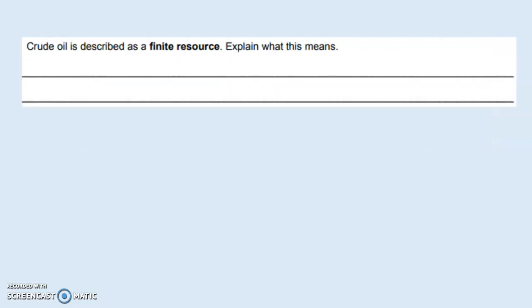Crude oil is described as a finite resource. Explain what this means. It's the same thing we looked at in the previous slide. It is not being made anymore or it is being made extremely slowly.